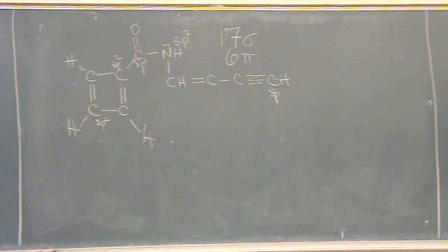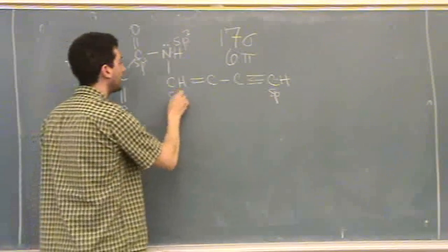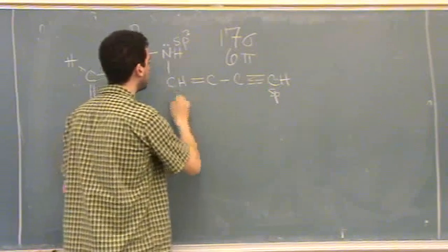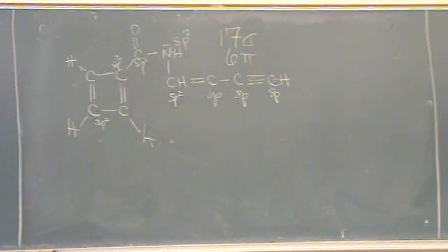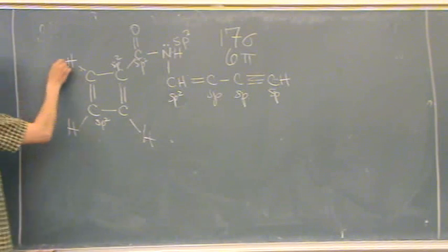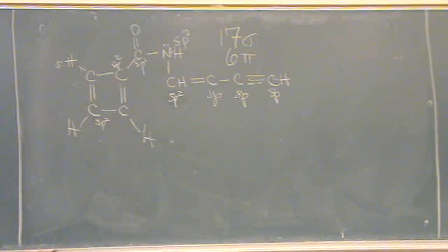Are there other SP hybridized atoms? SP. All these? Yeah. Not that one. That's SP2. But this one is SP and this one is SP. Because they both have two groups. All hydrogens have what orbitals? All hydrogens. Yeah, S. Just S. Yeah. Just an S. One bond, that's an S. It's not hybridized, but it's an S orbital.